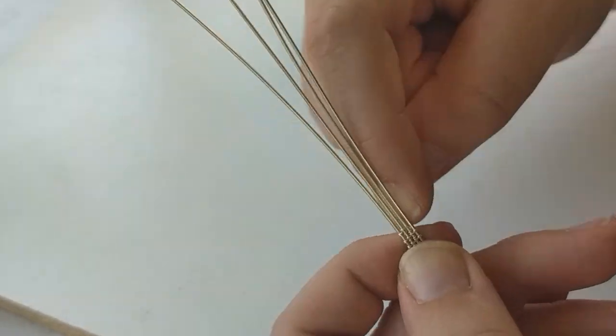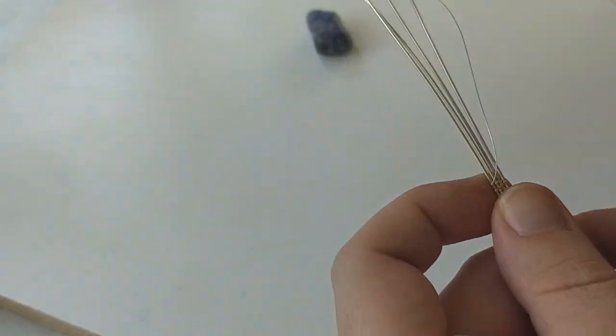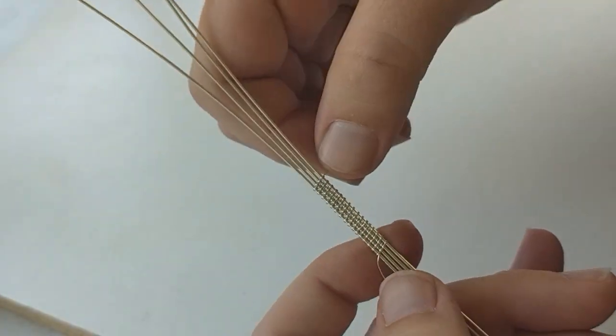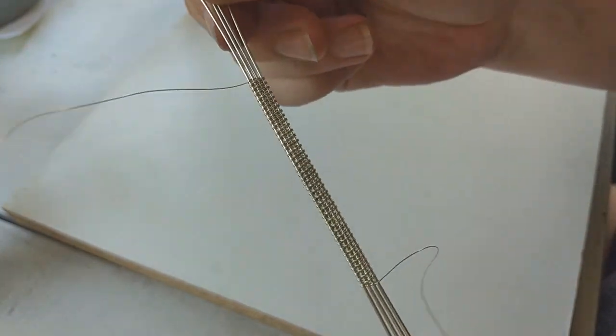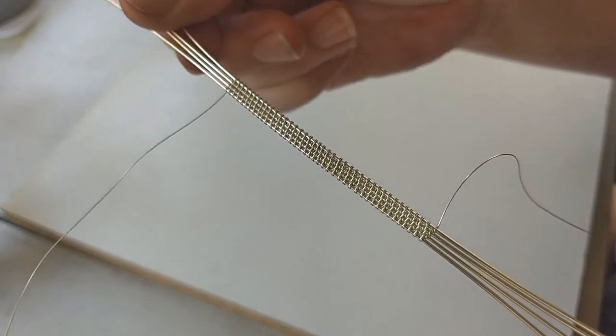You want to use a very long piece of 30 gauge wire for this wrap. I typically use an entire arm span of wire in a three inch long wrap. Too much wire is always better than not enough.